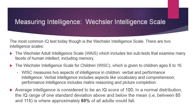The average intelligence is considered to be an IQ score of 100. In a normal distribution, the IQ range of one standard deviation above and below the mean — between 85 and 115 — is where approximately 68% of all adults around the world fall. So the vast majority of people on earth range between 85 and 115 in terms of their intelligence.